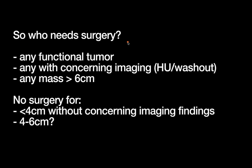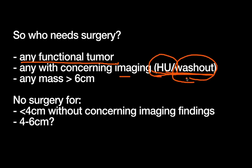So we have our H&P, our labs, and our imaging — and who needs surgery? Anyone with a functional syndrome needs surgery: anybody with hypertension and signs of an aldosteronoma, Cushing syndrome, or pheochromocytoma with intermittent hypertension — all those people get surgery. Anybody with concerning imaging findings — high Hounsfield units over 10, or low washout less than 50 — they need that mass taken out. And any mass definitely over six centimeters is highly suspicious for adrenal cancer and needs to be removed.